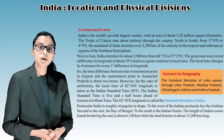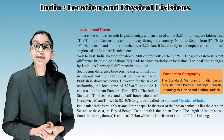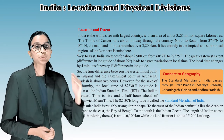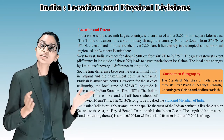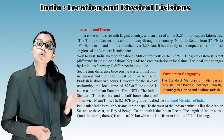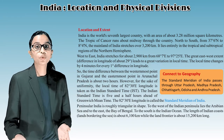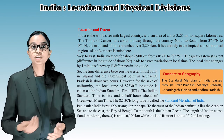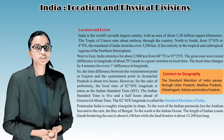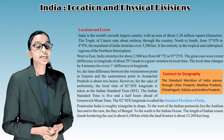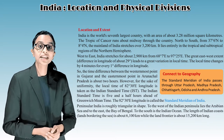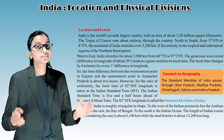The local time changes by four minutes for every one degree difference in longitude. So the time difference between the westernmost point in Gujarat and the easternmost point in Arunachal Pradesh is about 2 hours. However, for the sake of uniformity, the local time of 82°30' East longitude is taken as the Indian Standard Time.